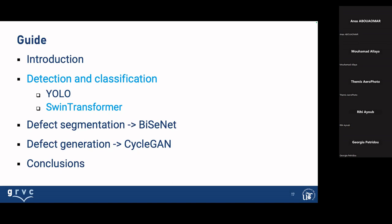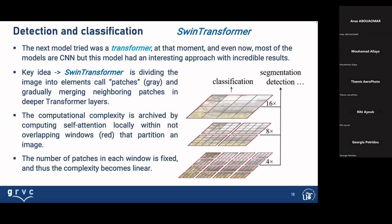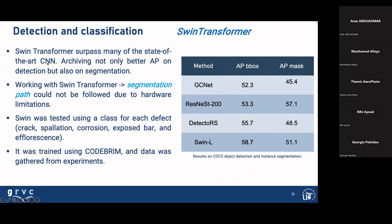Before using cloud computing, we used the Swin Transformer. The transformer is now more widely used than conventional neural networks. The key idea is dividing the image into elements called patches, and gradually merging neighboring patches in deeper transformer layers. Computational complexity is achieved by computing self-attention locally within non-overlapping windows. The window is fixed inside every patch — here it is four by four — and the complexity becomes linear. The Swin Transformer surpassed many state-of-the-art CNN models, and we achieved not only better average precision on detection but also on segmentation.